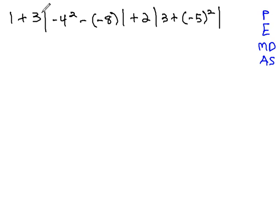When this problem has two sets of absolute values, those absolute values we treat like a parenthesis. We do not make everything positive until the absolute value is completely simplified.